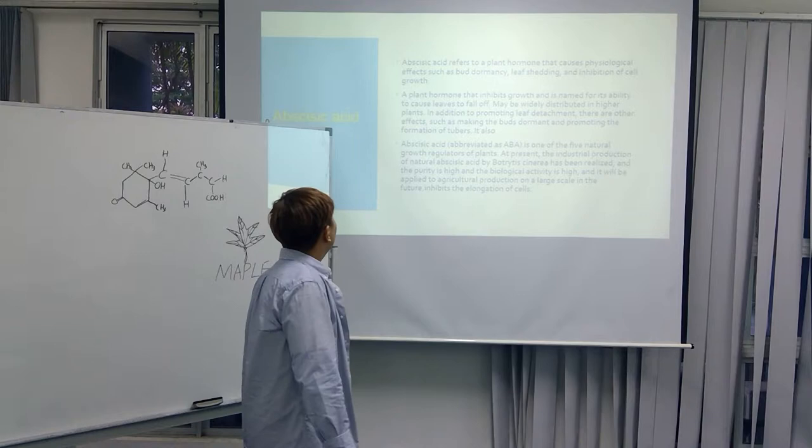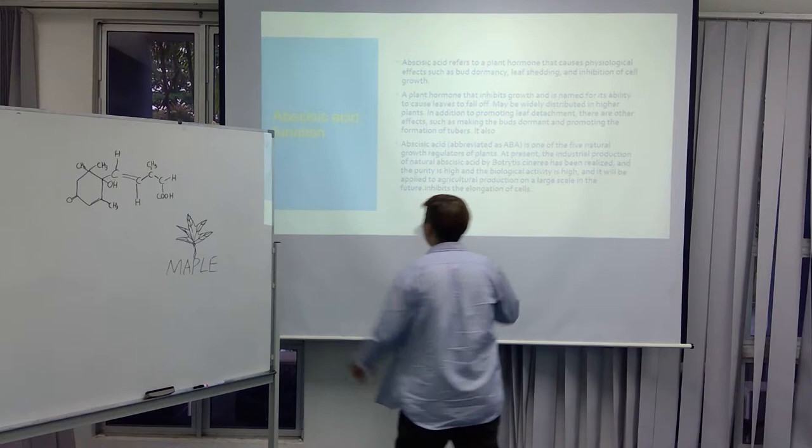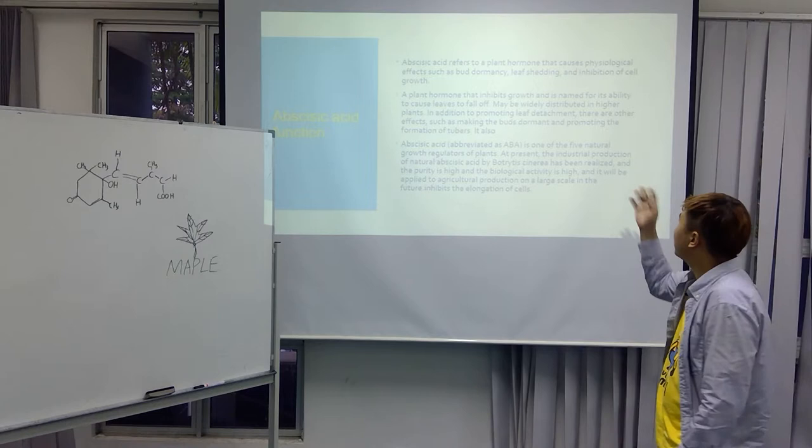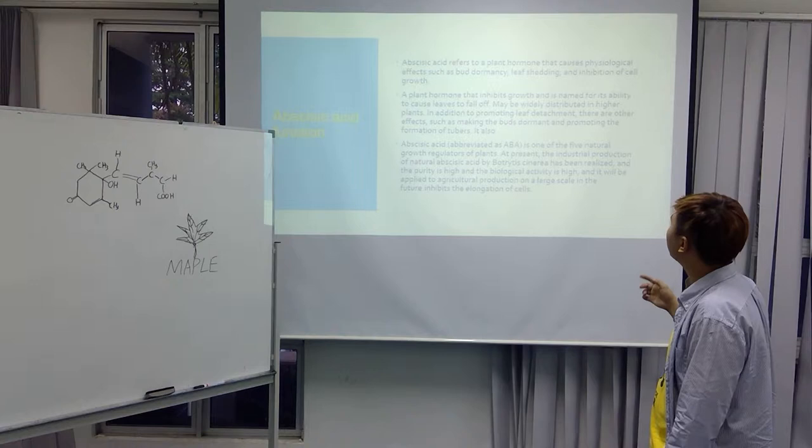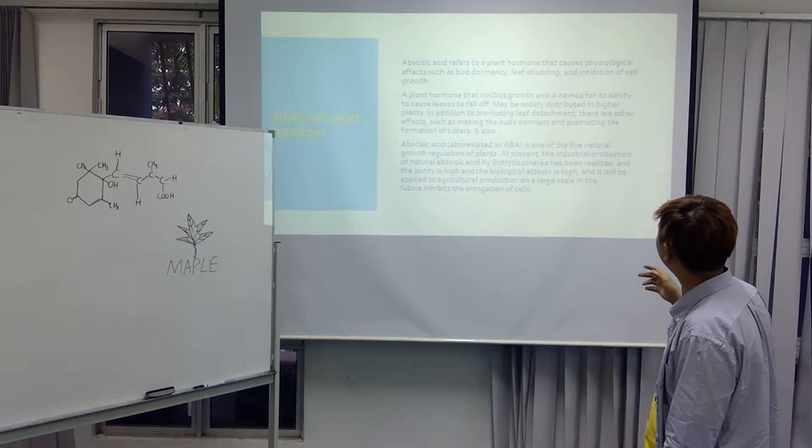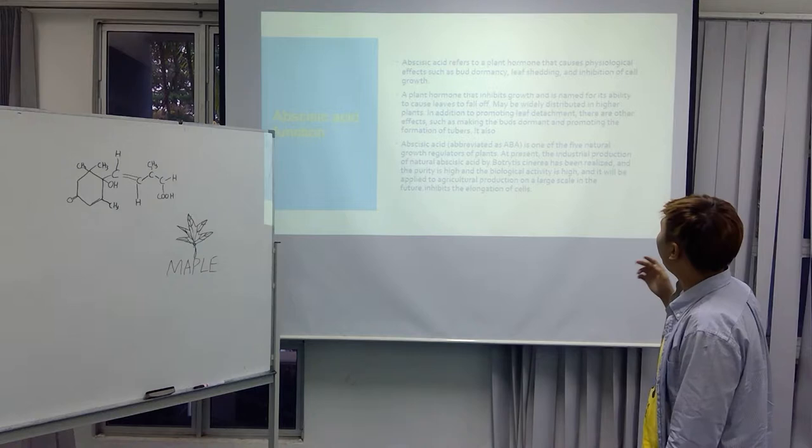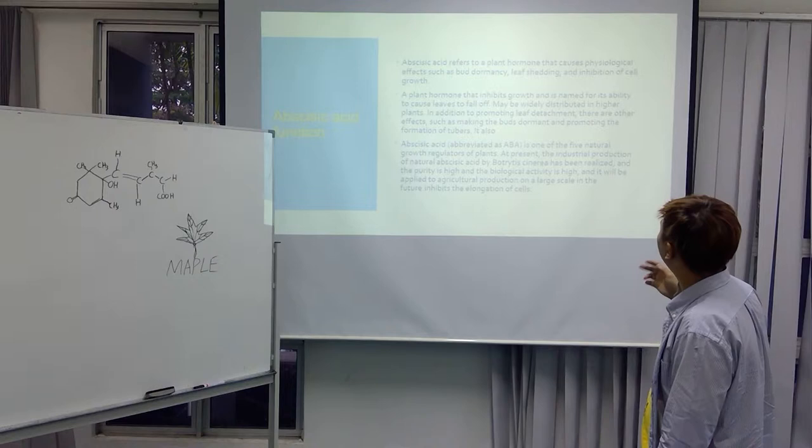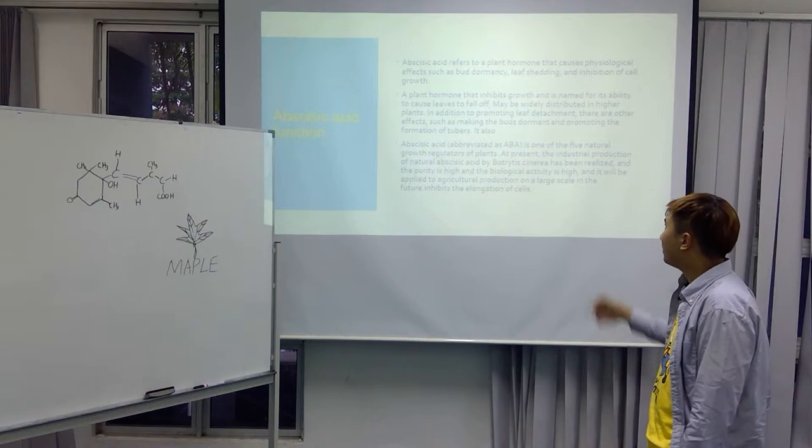For this, the function of abscisic acid. There are three functions about this. The first function is abscisic acid and it refers to a plant hormone that causes physiological effects such as bud dormancy, leaf shedding.